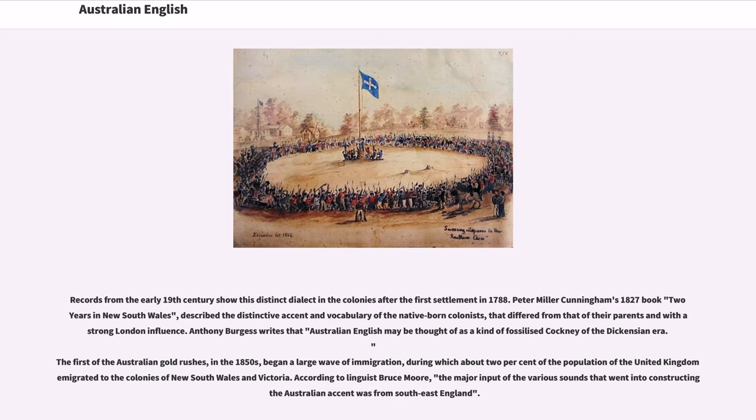The first of the Australian gold rushes, in the 1850s, began a large wave of immigration, during which about 2% of the population of the United Kingdom emigrated to the colonies of New South Wales and Victoria.